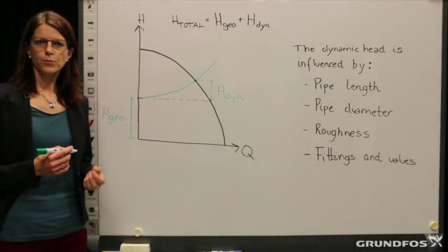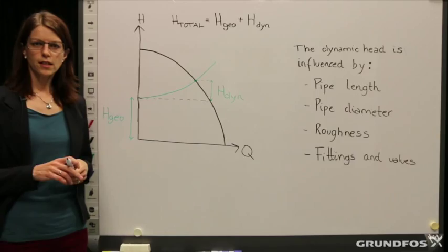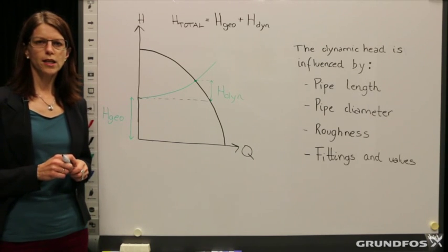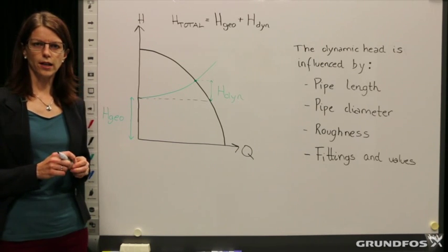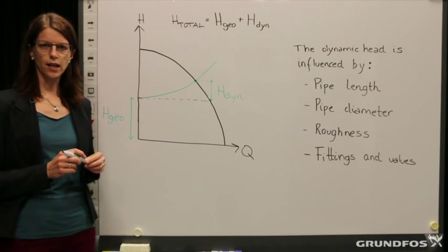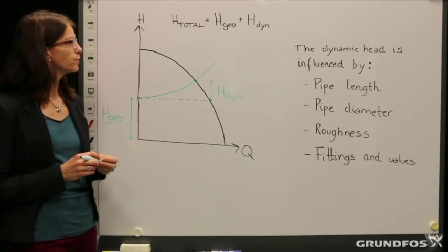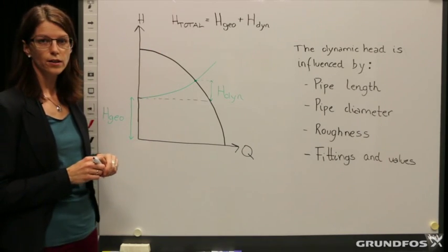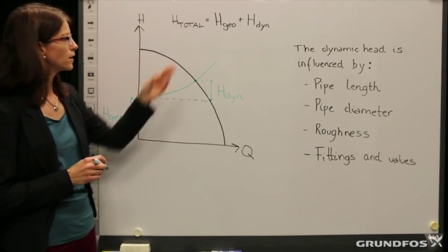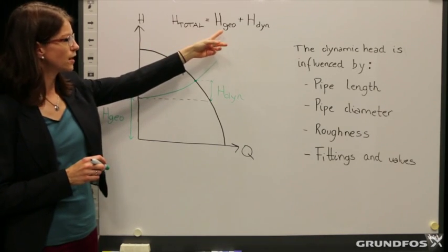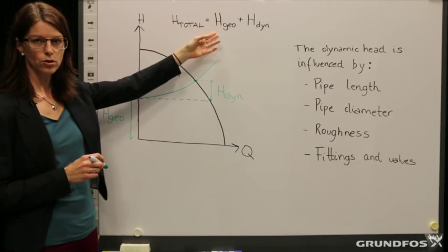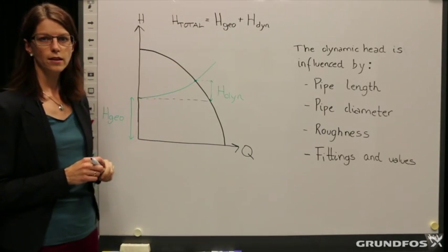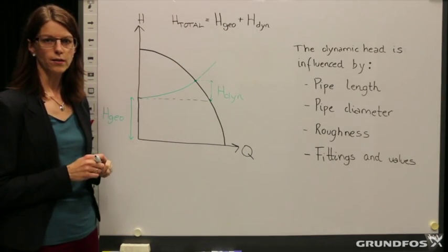To make the system curve needed for pump sizing, we need to calculate the total head in the system. The total head is calculated from the geodetic head, Hgeo, also called the static head, and the dynamic head.